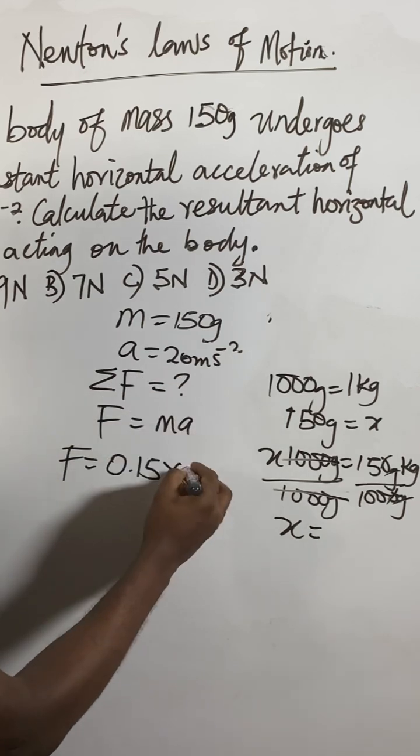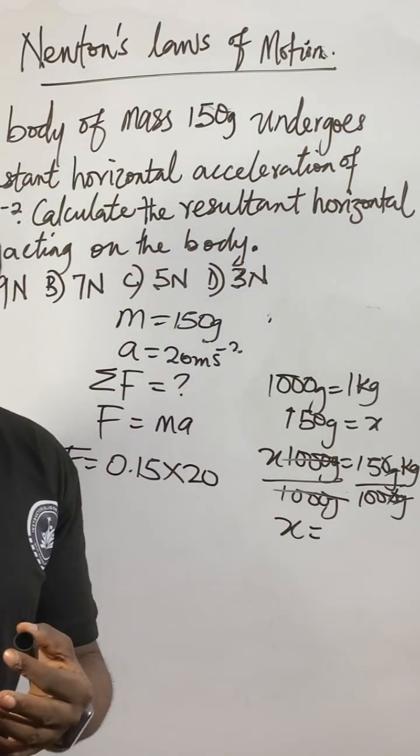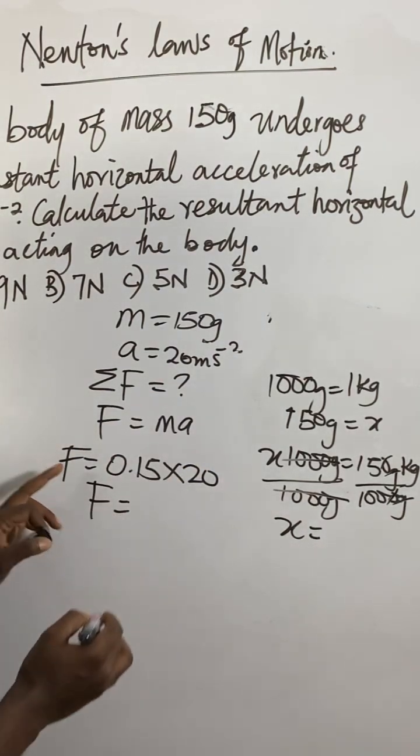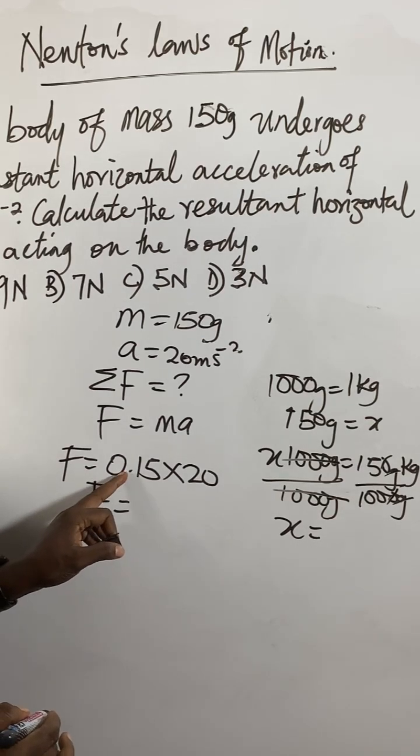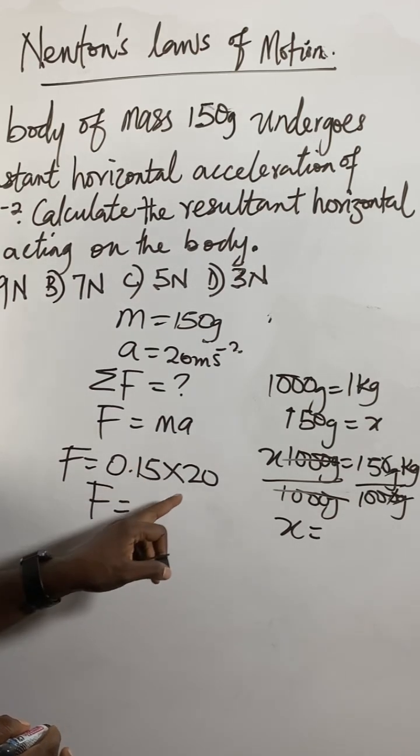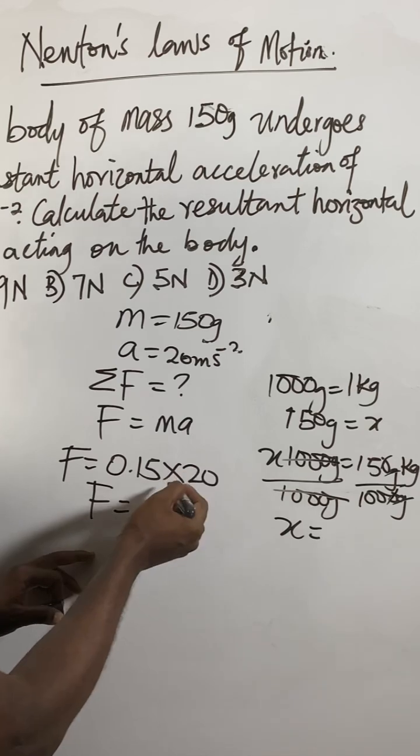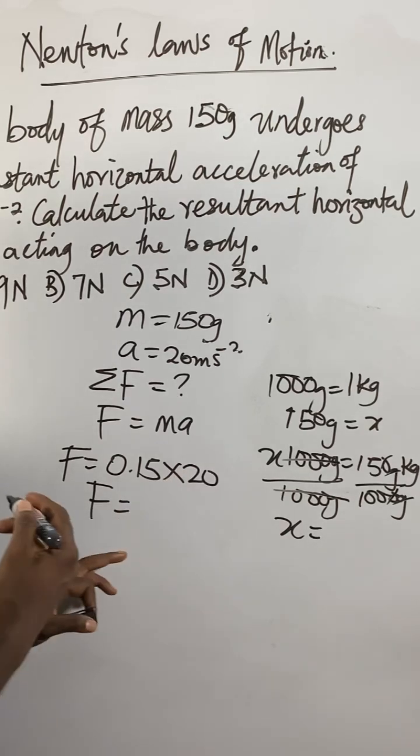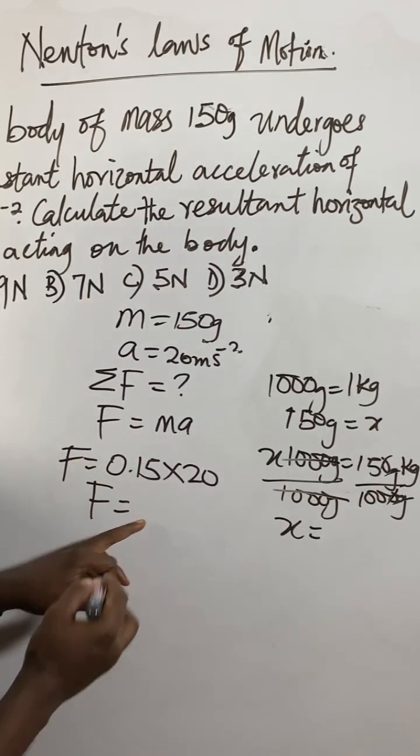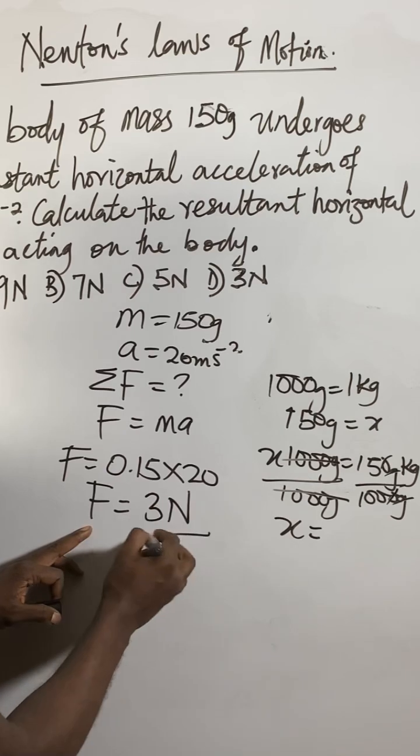Times acceleration will be 20. So now if you multiply these two things, if you divide this one, this is 15 over 100 times 20. 20 will go into 100 how many times? 5 times. So 15 divided by 5 will give you 3. So the answer will be 3 newtons.